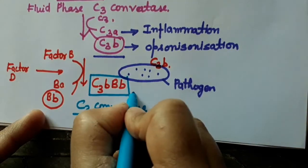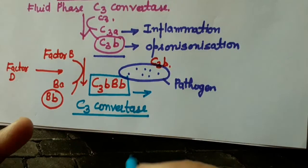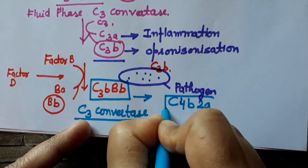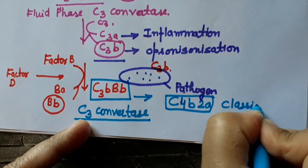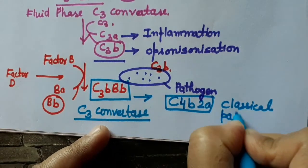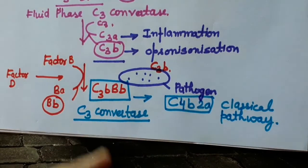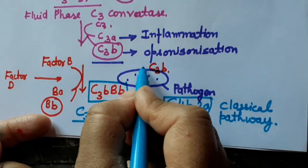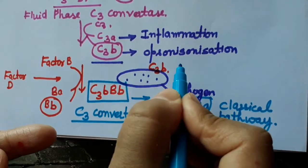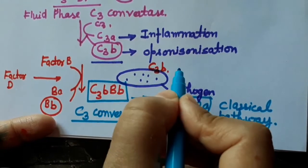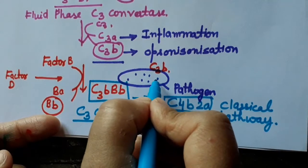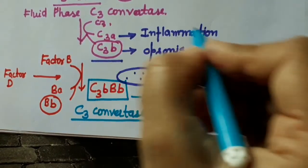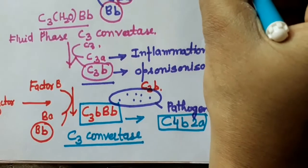This C3 convertase is analogous to the C4B2A complex of the classical pathway. C3B can even join its own cells. If there is a pathogen from outside it will join on its surface, but it can also join on its own cells. In that case its own cells contain sialic acid.